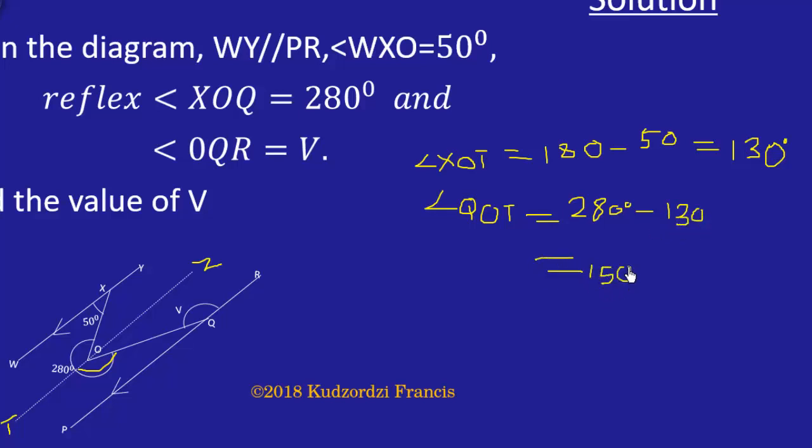Now this angle is alternate to the angle V, therefore V is also equal to 150 degrees. The reason is that alternate angles are equal. So don't forget to enroll in my school for unlimited benefits. The videos are posted almost every day and it will help you write your WAEC and get the best grades.